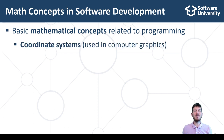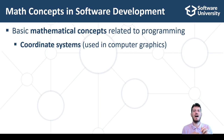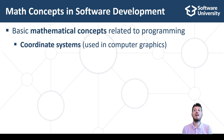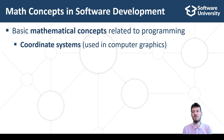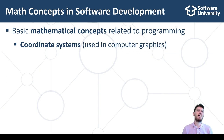Coordinate systems and graphical objects with their size, position and other numerical characteristics are used in computer graphics and user interface systems such as HTML and CSS, PDF, SVG and others.